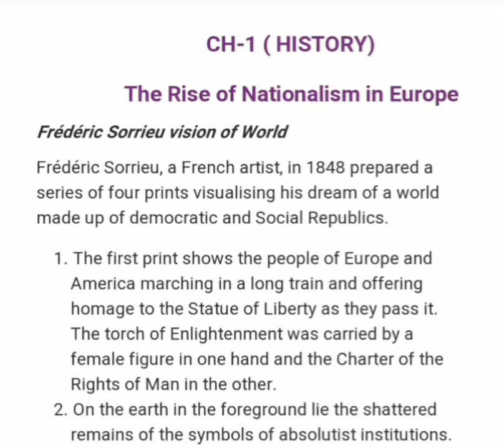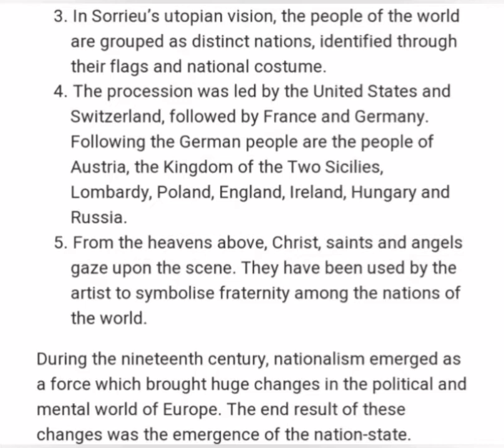In the second vision, on the earth, in the foreground, lie the shattered remains of symbols of absolutist institutions. In Saurier's third European vision, the people of the world are grouped as distinct nations, identified through their flags and national costume.